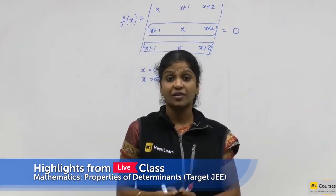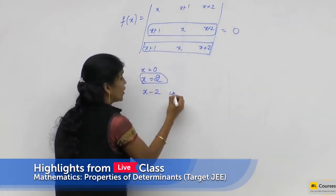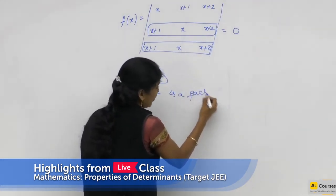At that time what factor theorem is telling us means this x minus 2 is a factor for the given determinant.